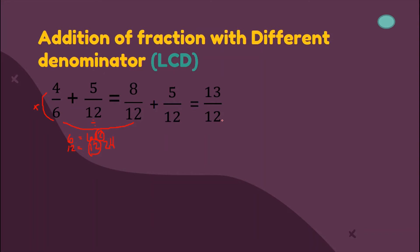As you have noticed, our answer here is an improper fraction — the numerator is bigger than the denominator. If our answer is an improper fraction, we need to change it into a mixed number by dividing: 13 divided by 12. How many 12s can we find in 13? We have 1. 1 times 12 is 12, and 13 minus 12 is 1. So our final answer is 1 and 1 over 12.